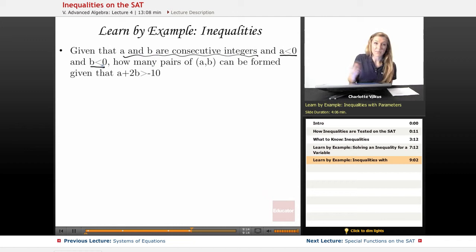So both of them are negative, is what that essentially means to us. We want to know how many pairs of A, B can be formed given that A plus 2B is going to be greater than negative 10.